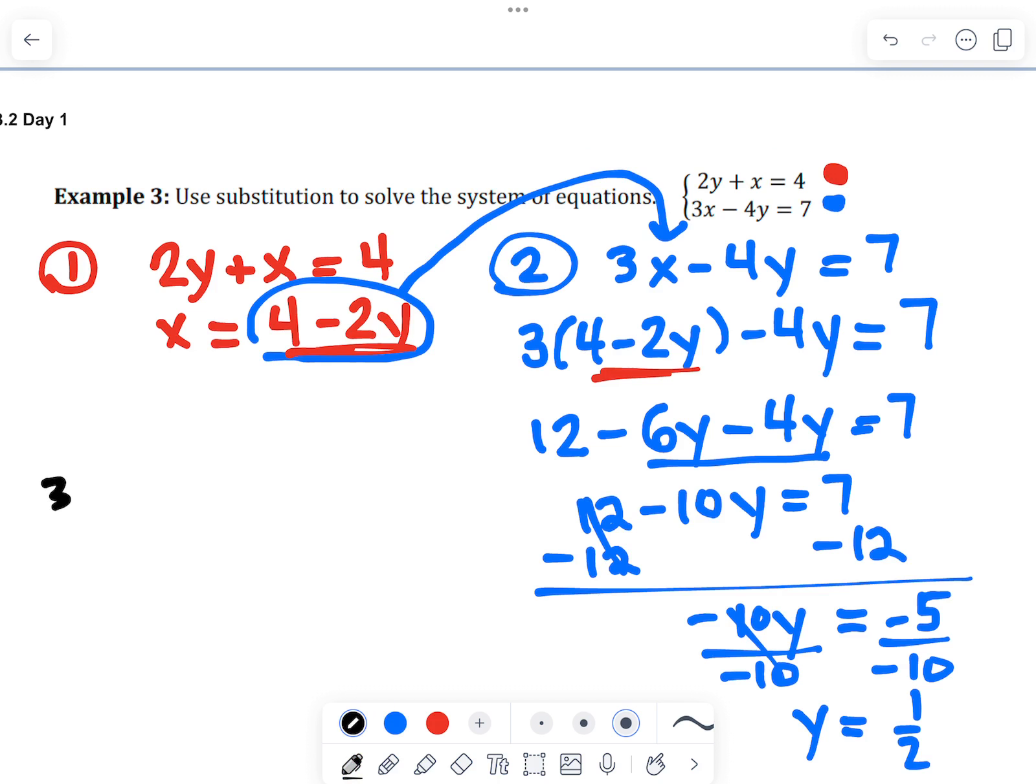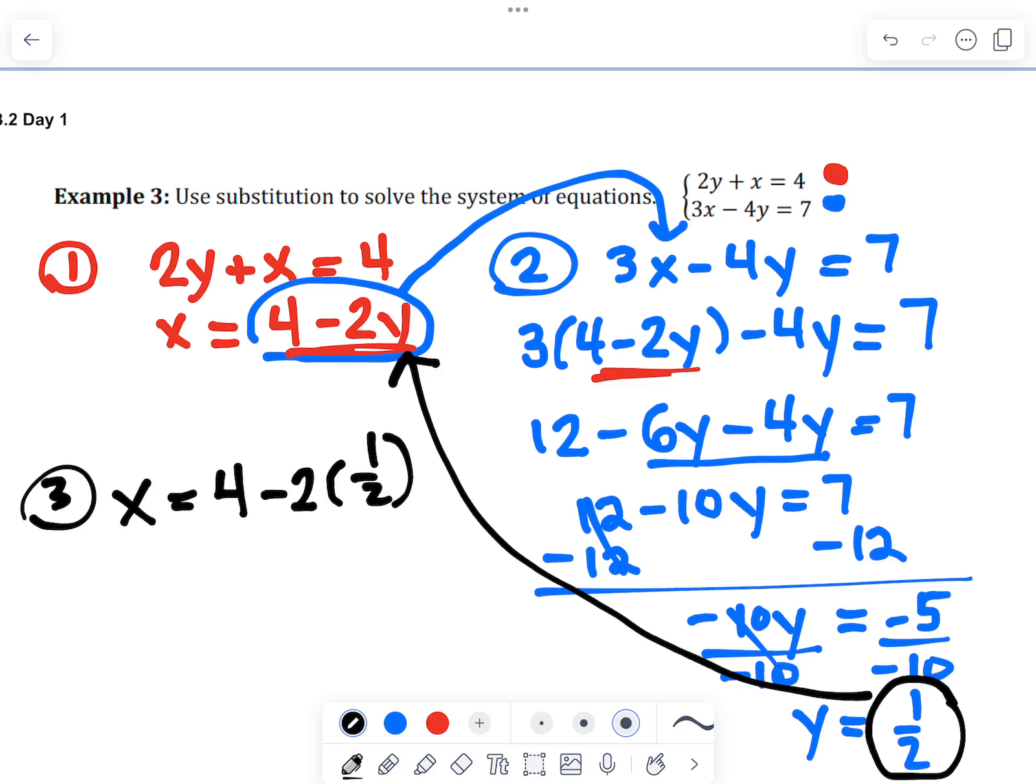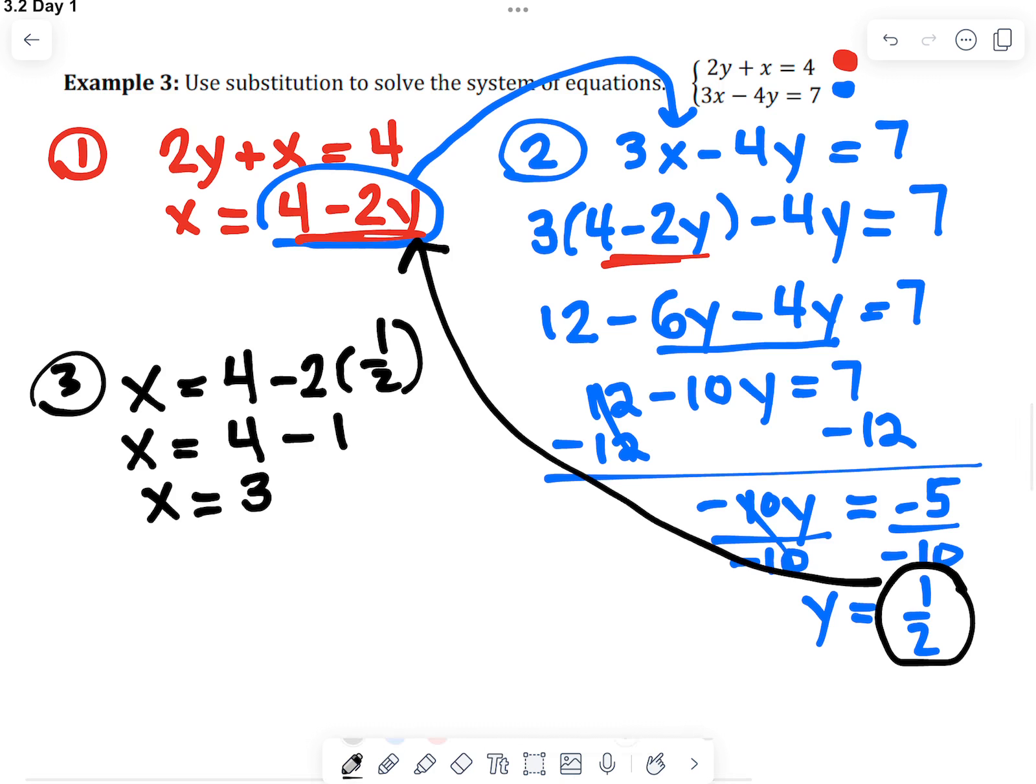Step 3 is to take this 1 half and go back up into the red equation for y. So x equals 4. Replace that y with 1 half. And now we just solve for x. So 2 times 1 half is negative 1. x equals 3. So the solution to this system as an ordered pair is 3 comma 1 half.